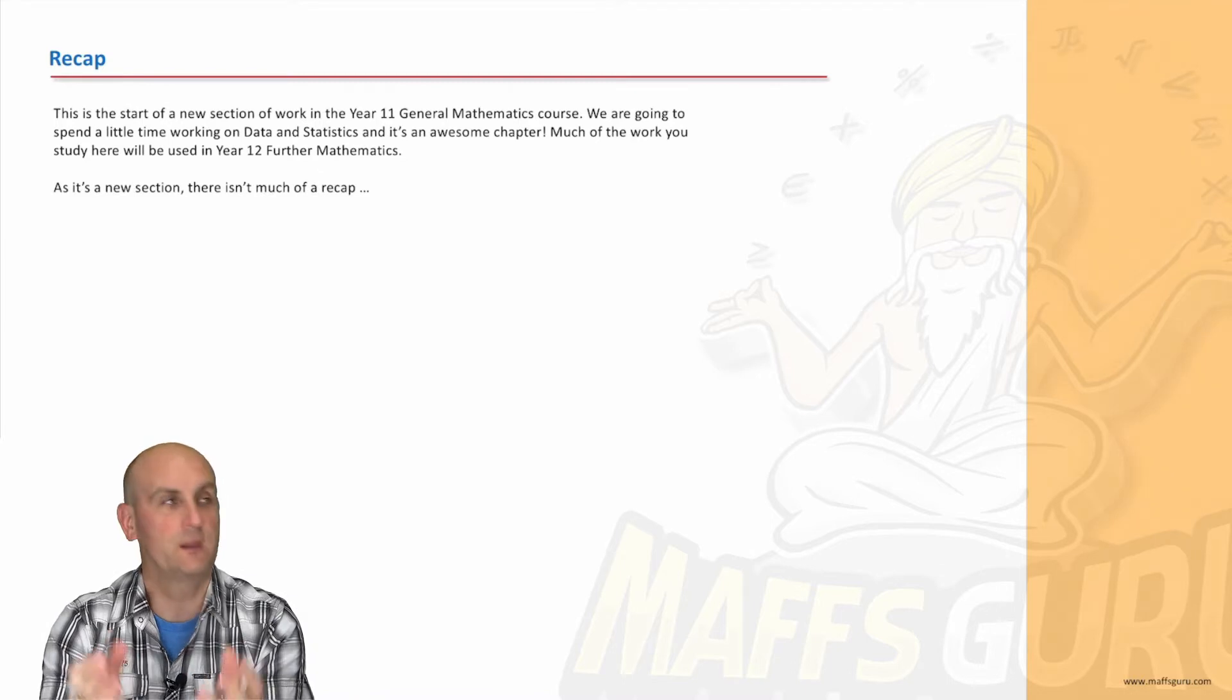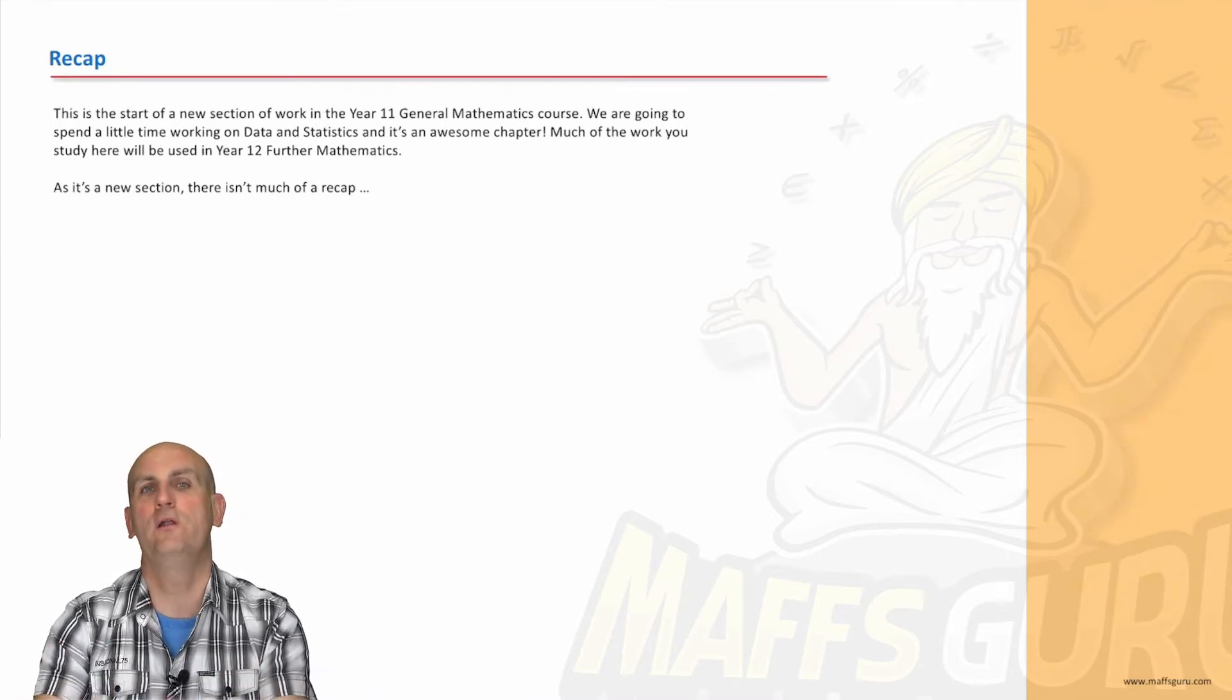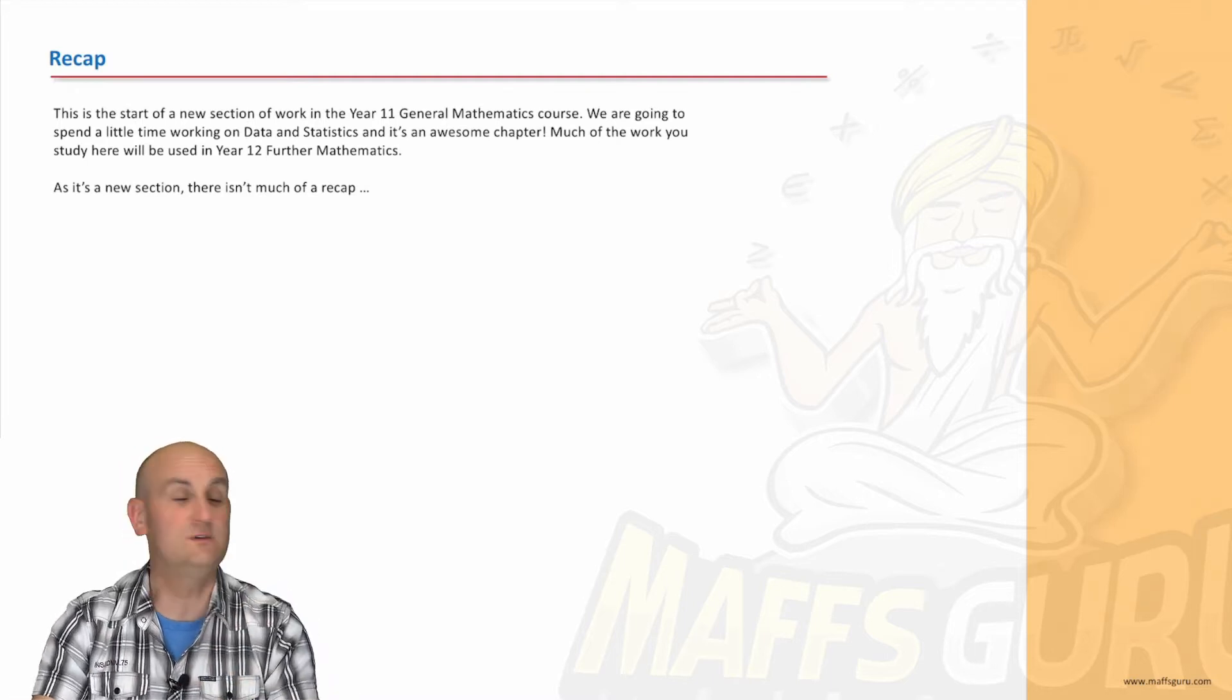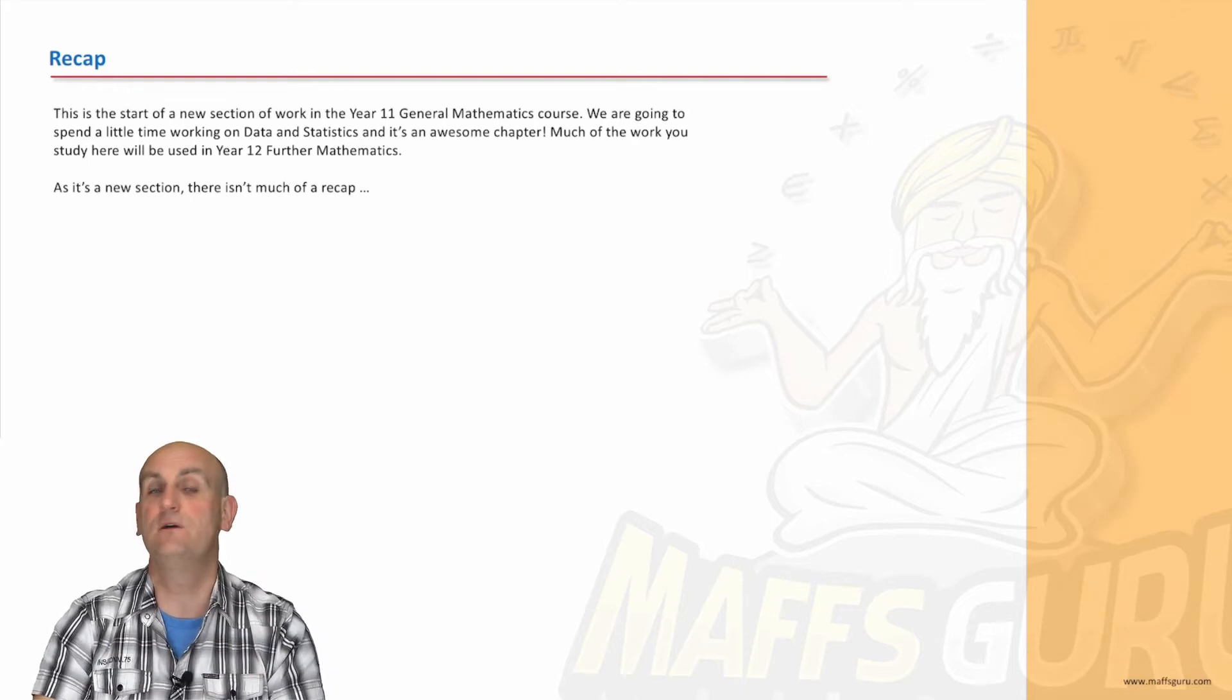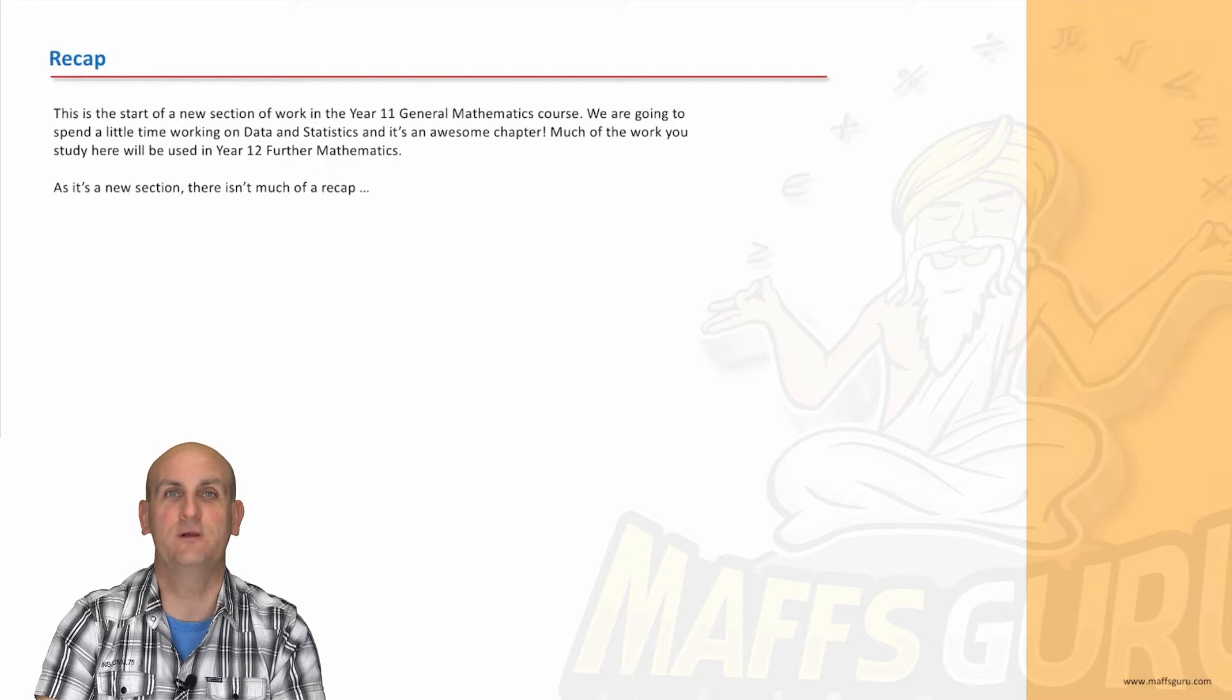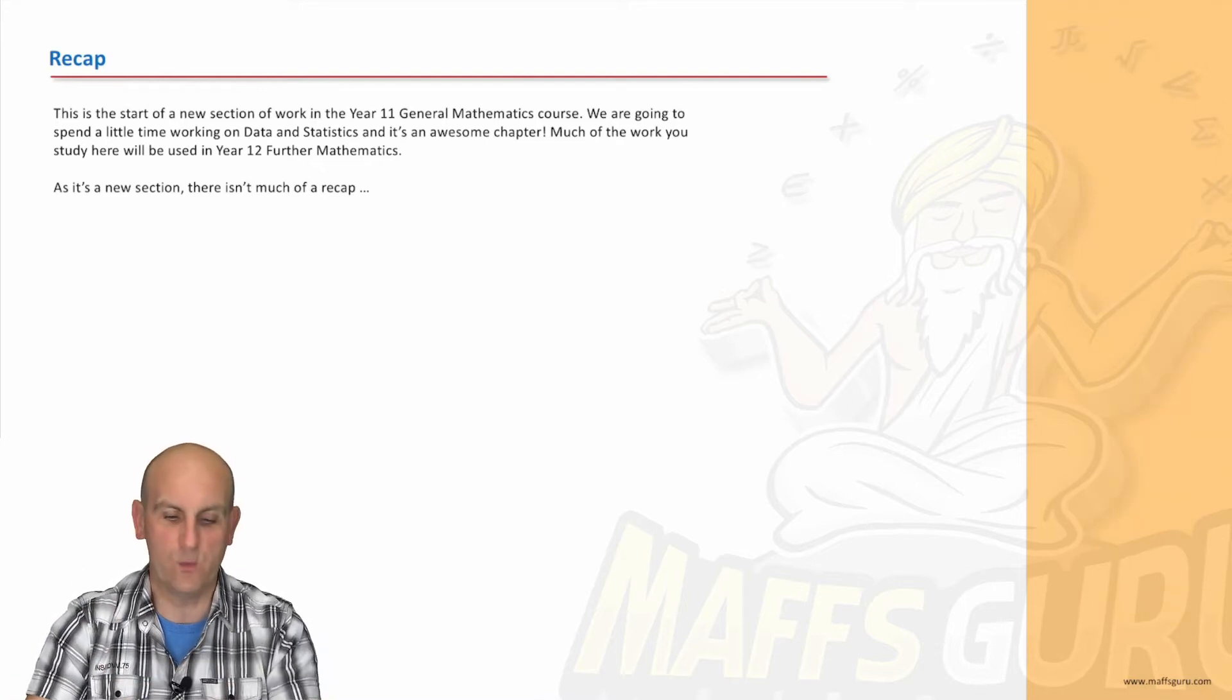Why is this important? Because the Further Maths Units 3 and 4 course builds on this stuff. If you smash this course, you are going to be so well set up for next year. Chapters 1 to 6 of the Further Maths Unit 3 and 4 textbook basically is all data. So this stuff, way, way, way important.